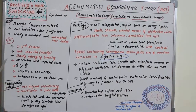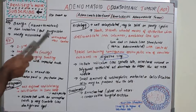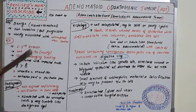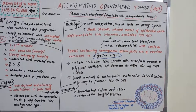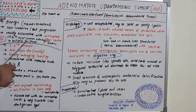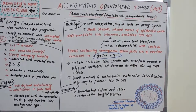AOT is most commonly seen with an unerupted maxillary canine, and it is the fourth most common odontogenic tumor. It can be divided into two variants: central, which is intraosseous, and peripheral, which is extraosseous.